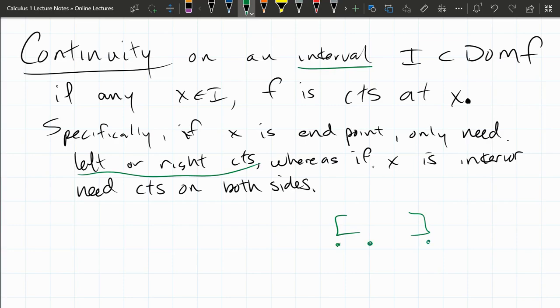Anything in between, you need both left and right limits to exist and agree, but if you're at the end, you only need to check - if you're at the left end, you check the right. If you're at the right end, you only check the left limit.